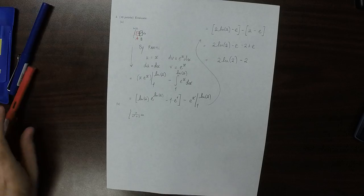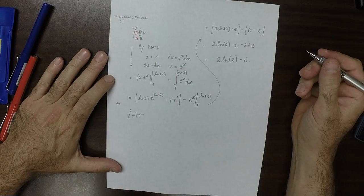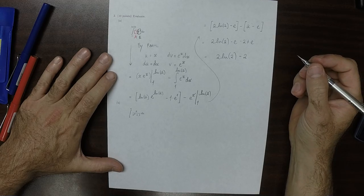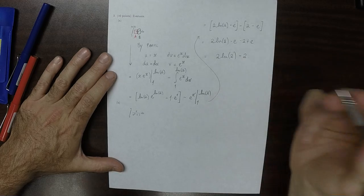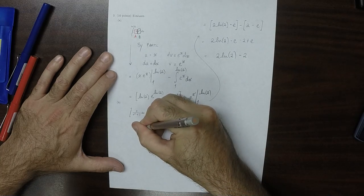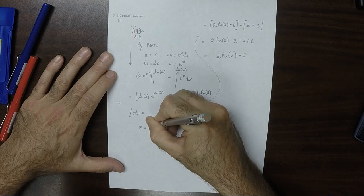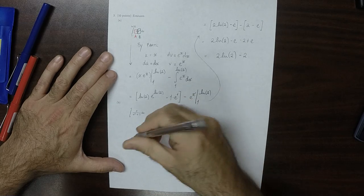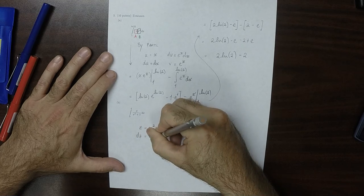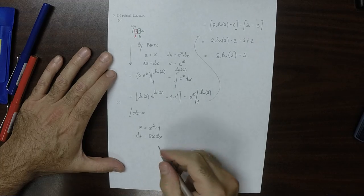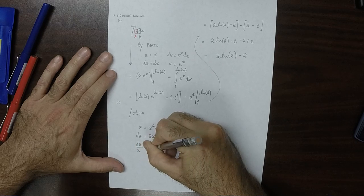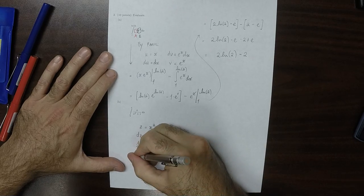Okay, so as for the last one, the last one can be done with a substitution. So how about, we've used u so many times, how about z? z is x squared plus 1, so dz is 2x dx. And I don't need that 2 on the right-hand side, so I'll move it to the left-hand side.